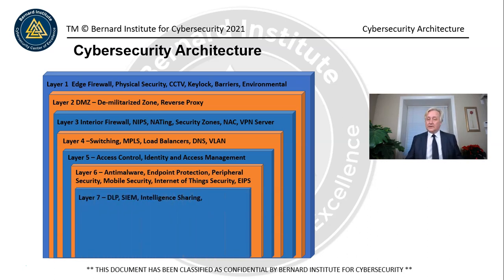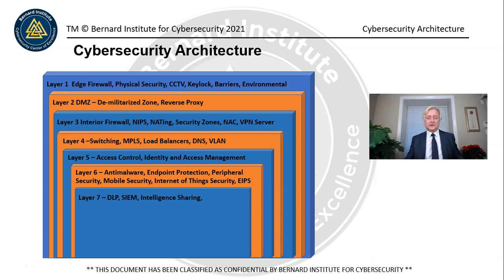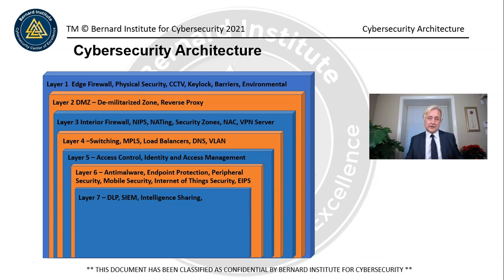Layer 7 includes DLP — data loss prevention — and the security information and event management system, SIEM, as well as intelligence sharing. DLP is designed to make sure people aren't walking away with data from the organization that doesn't belong to them. We have a device that monitors for this type of nefarious activity, potentially from an insider threat.